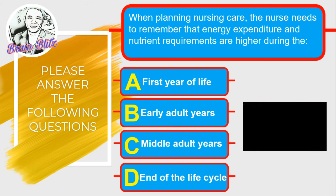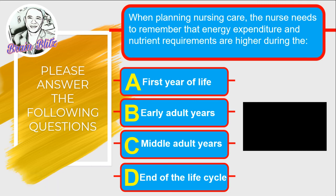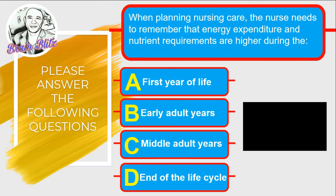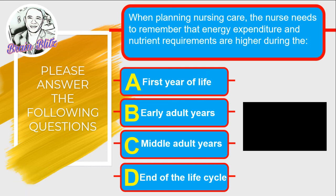Question one: When planning nursing care, the nurse needs to remember that energy expenditure and nutrient requirements are higher during — A: first year of life, B: early adult years, C: middle adult years, or D: end of life cycle. Since rapid growth and development occurs in the first year of life, the correct answer is letter A, the first year of life.